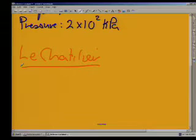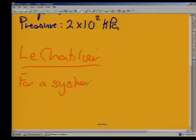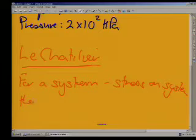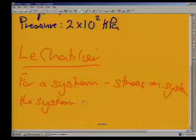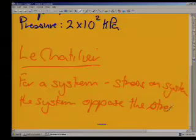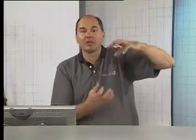He says that for a system, if you have a stress on the system, then the system will oppose the stress. Let's think about this — oppose the stress — and see how we can work this into our thinking. If I take a spring, just an ordinary spring, and I push down on it, what does the spring try and do? It will push my hand — it tries to push up to get back to its equilibrium situation.